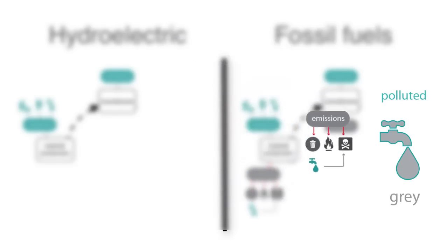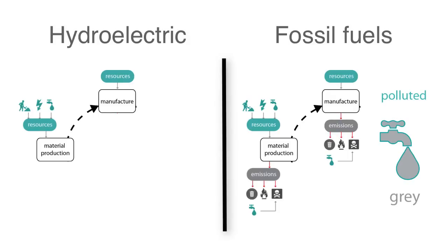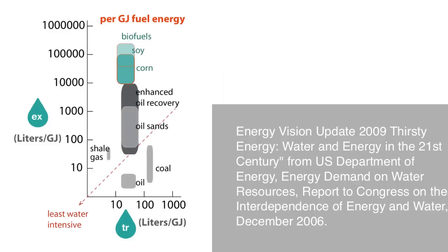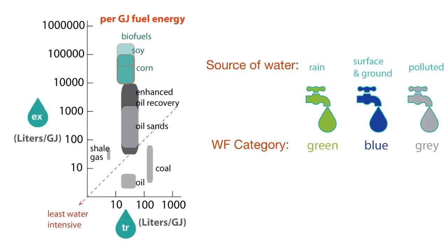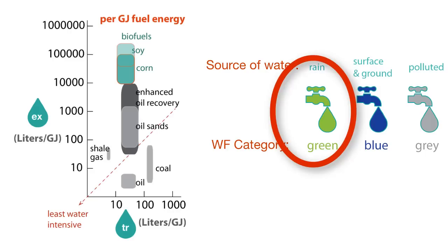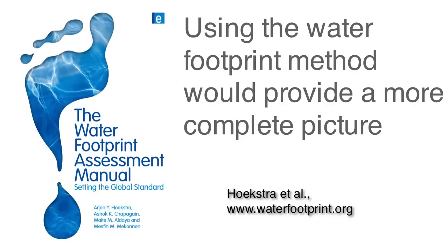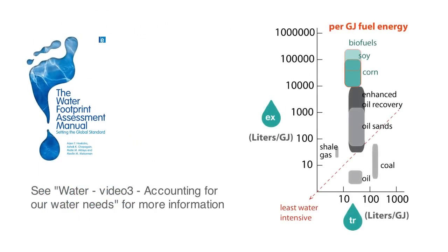When we consider a comparison of liquid fuels, we see that the most water-intensive fuels are the biofuels. For these fuels, the majority of the water is required in the growth stage for the soy and corn crops. As with the case for electricity, it's important to consider not just the quantity of water used for fuel production, but also the impact of the water use. Again, the water footprint tool would be helpful.